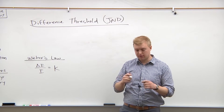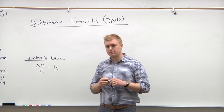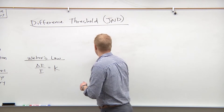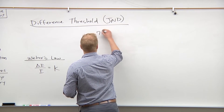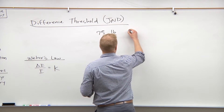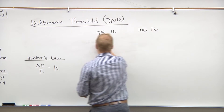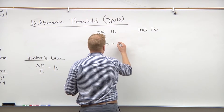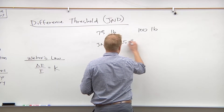What would be the JND? Exactly 25. So we have 75 pounds and 100 pounds, so the JND is going to be equal to 25 pounds.